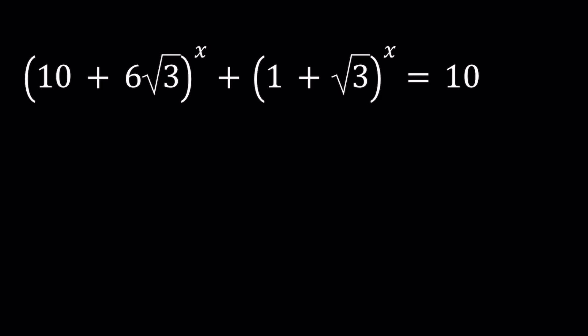First let me tell you what doesn't work. A lot of times this comes up so I wanted to clarify it. People say we can log both sides. Now you can log both sides but that's not going to bring the x's down. Why? Because we have a sum here. When you have a sum like a plus b and if you log it, that's not going to equal log a plus log b.